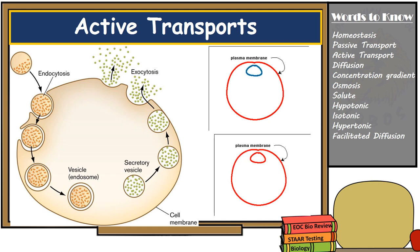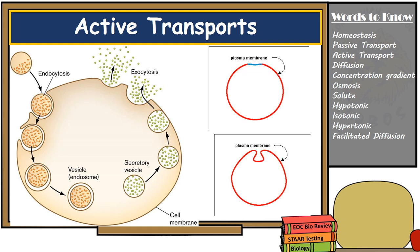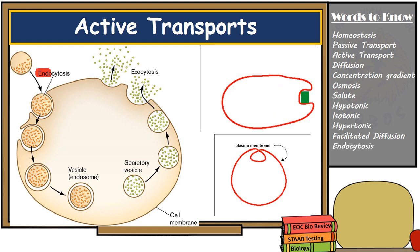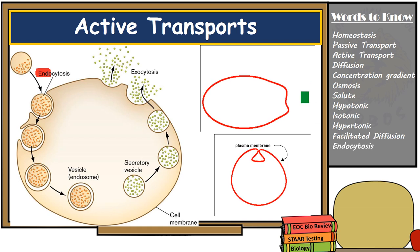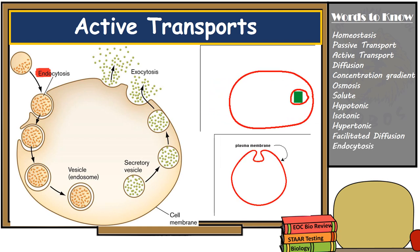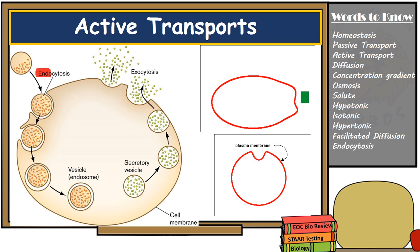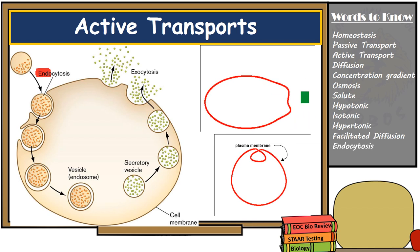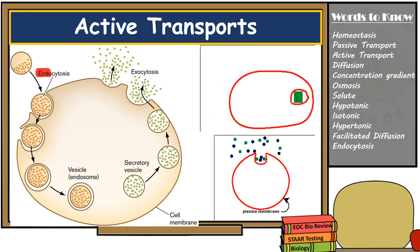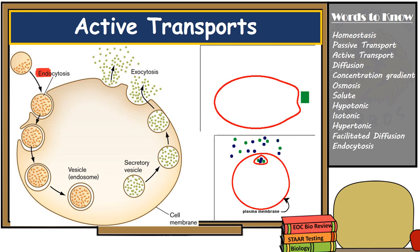Transport vesicles allow substances to enter or exit the cell without actually crossing the cell membrane itself. When substances are taken into the cell through a transport vesicle, we call this process endocytosis — 'endo' sounds like 'entering.' When the cell engulfs a large particle, this type of endocytosis is called phagocytosis, meaning 'cell eating.' In endocytosis, the cell membrane forms a pocket around the substance to be transported into the cell, and once inside, the pocket breaks off into a transport vesicle and releases the needed materials into the cell.